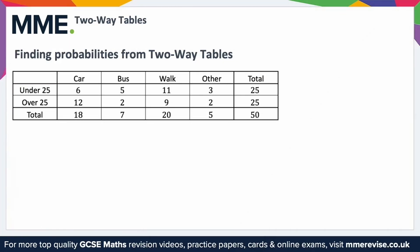You can also find probabilities from two-way tables. For example, we have a table showing information about how fifty people travel to work. One person is chosen at random — calculate the probability of this person being under twenty-five years old and walking to work. The under twenty-five row and the walk to work column gives eleven, so the probability is eleven over fifty.